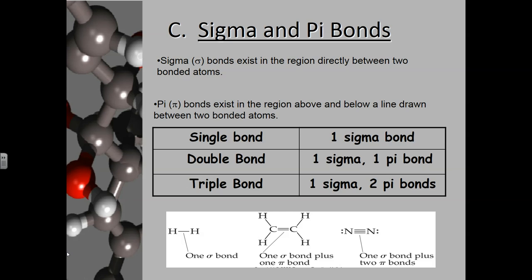Next, let's look at sigma and pi bonds — a new topic from Chem 1. A sigma bond exists in the region directly between two bonded atoms. A pi bond exists in the regions above and below a line drawn between two bonded atoms. A single covalent bond is always a sigma bond — single starts with S, sigma starts with S.